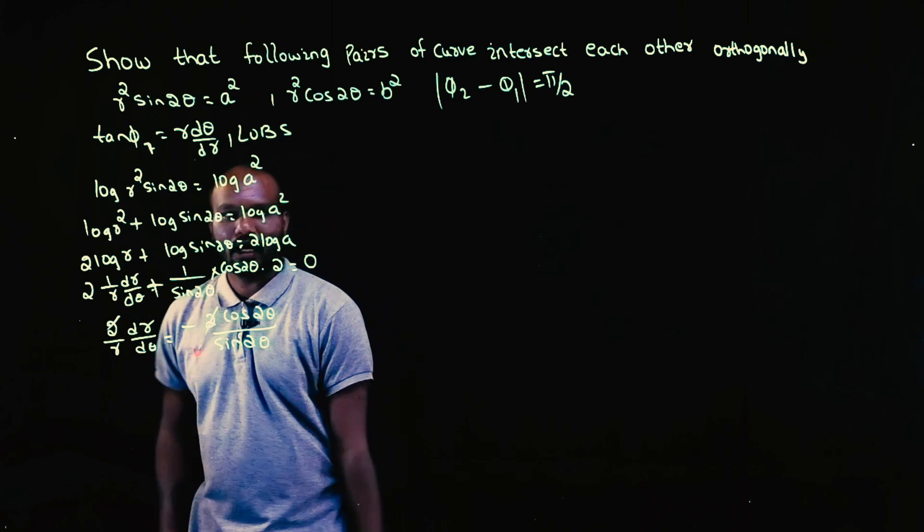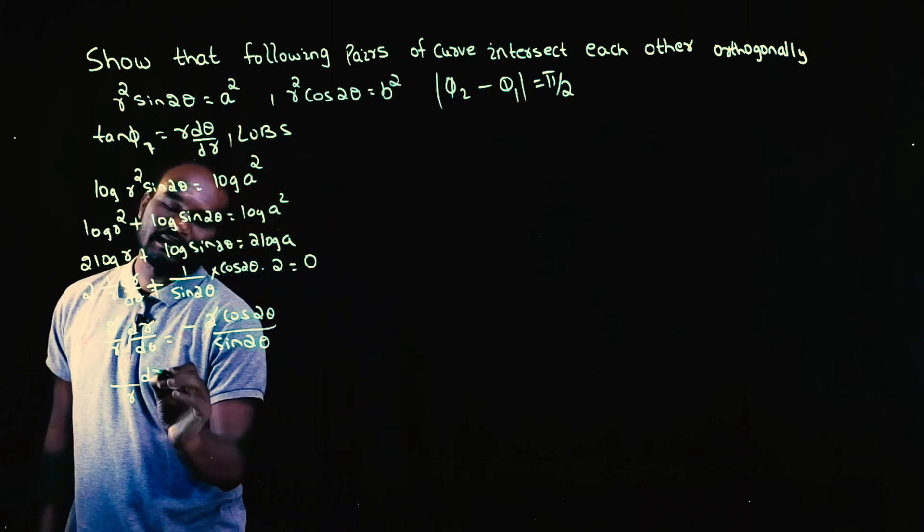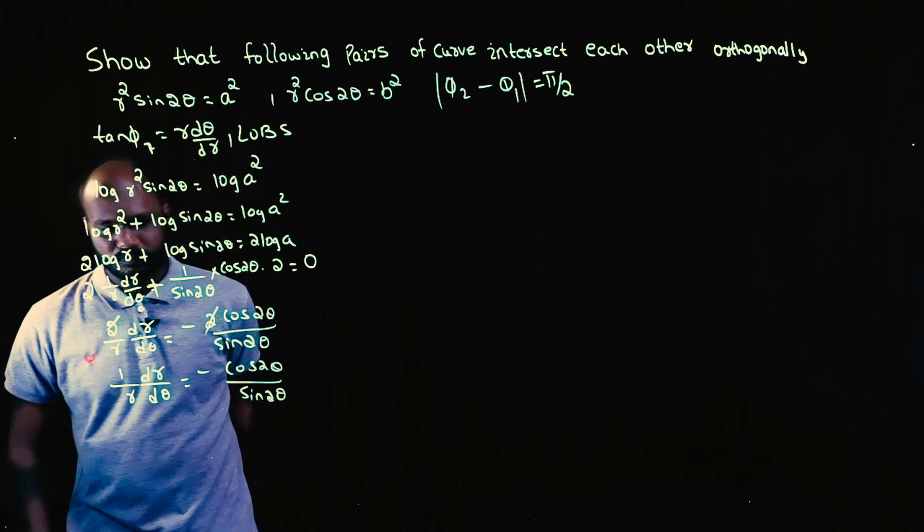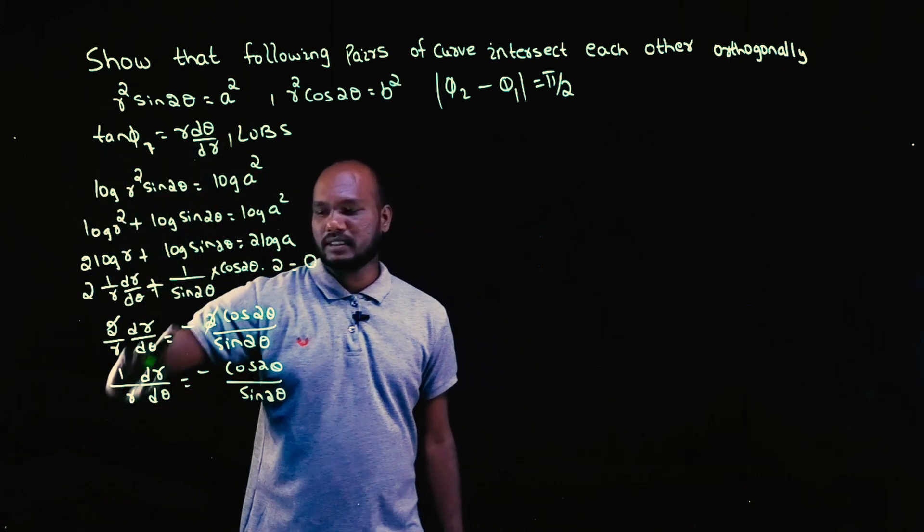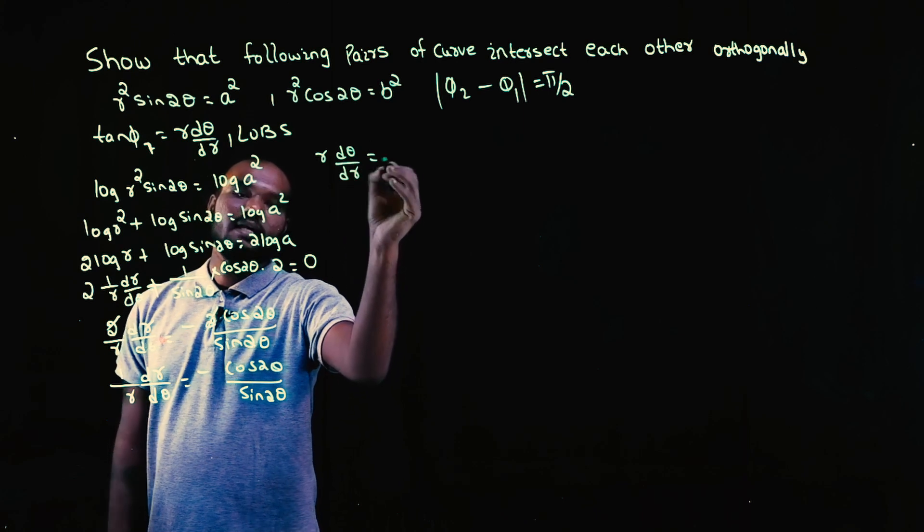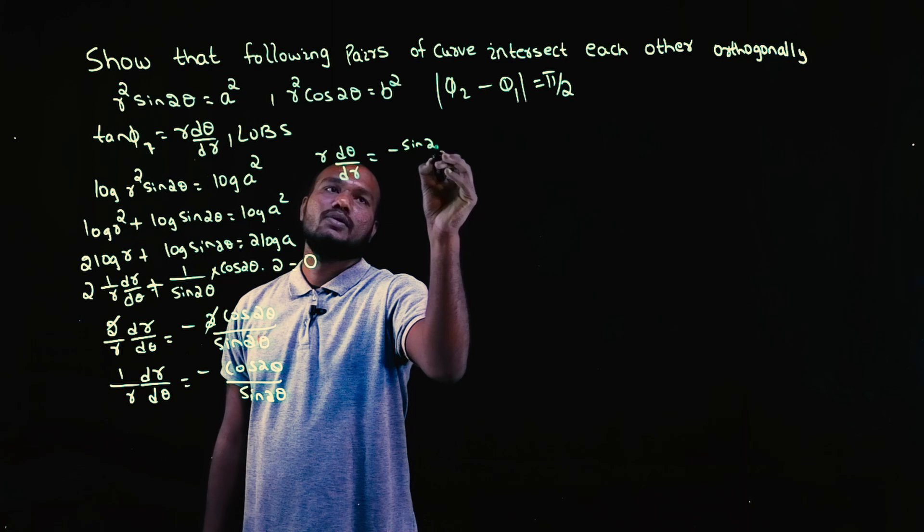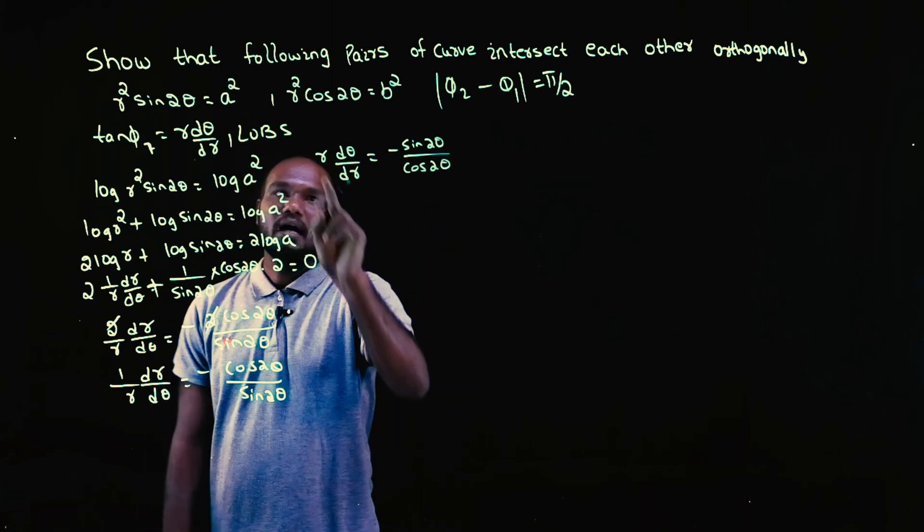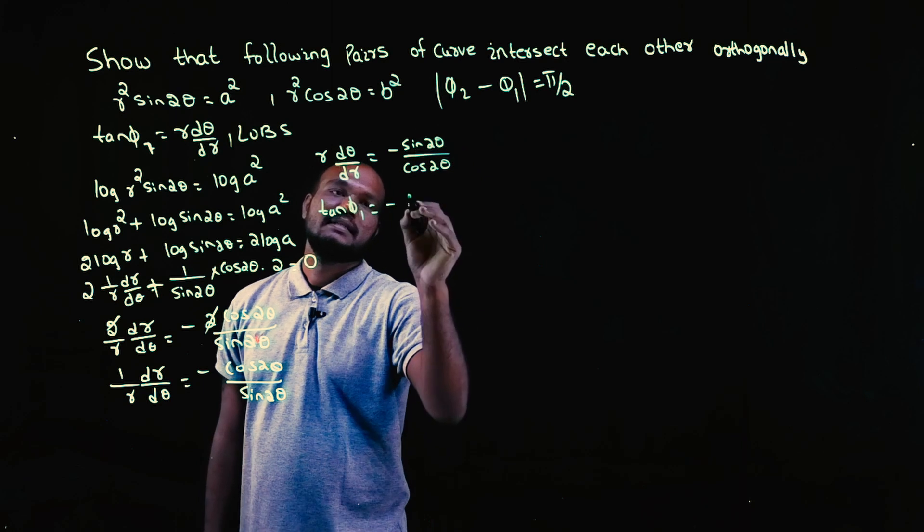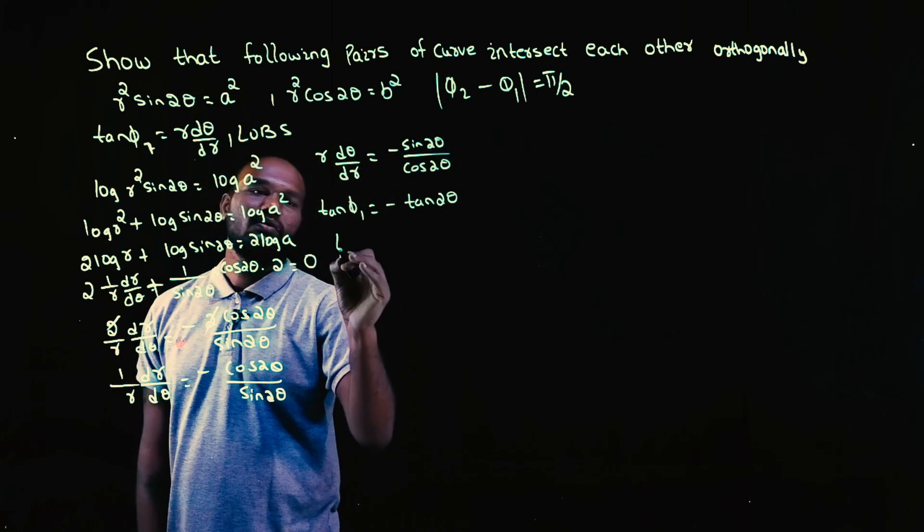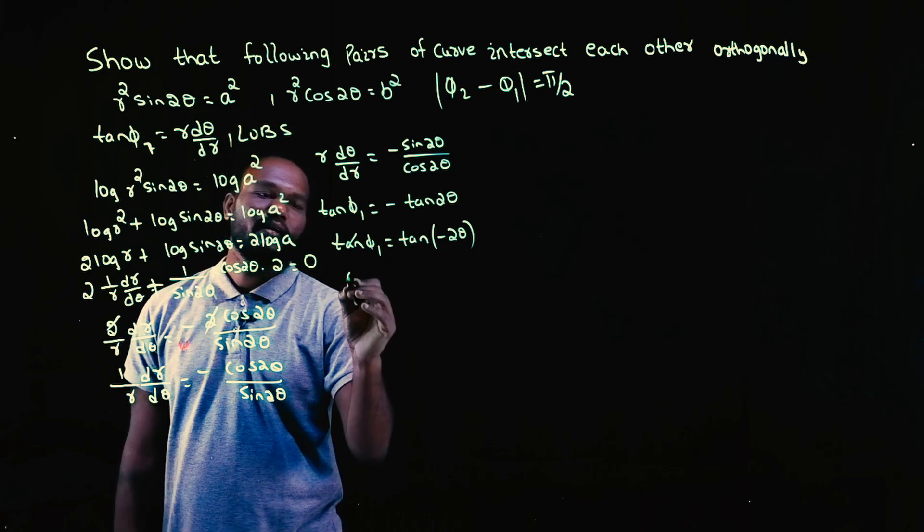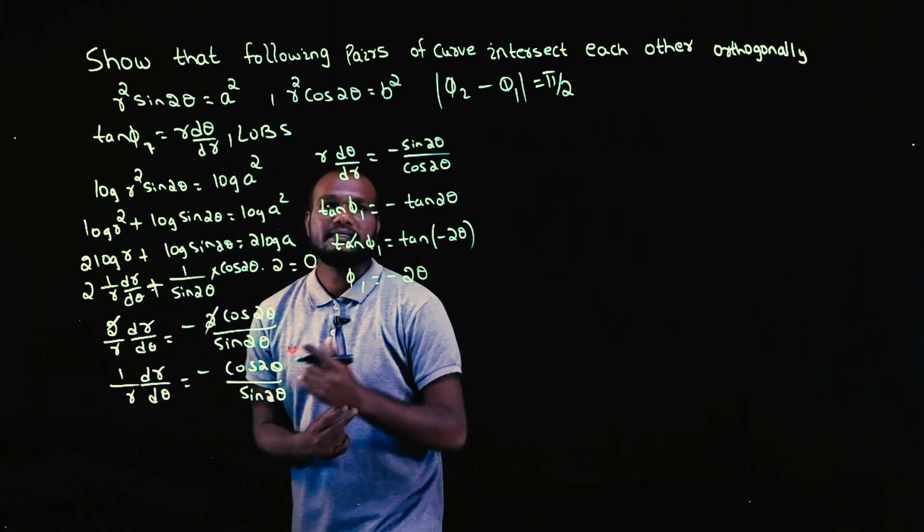Now I can take this 2 out, I'll be left with 1 by r dr by dθ equals minus cos 2θ upon sin 2θ. Do I want 1 by r? No, I want r in the numerator, just flip this one. 1 by r will become r, dr by dθ will become dθ by dr. This also will get flipped so sin 2θ will go in the numerator, cos 2θ in the denominator. r into dθ by dr is what? Tan φ1. So tan φ1 is equal to minus tan 2θ. Right, so tan tan we can take it out. φ1 is equal to minus 2θ. This is the first curve.